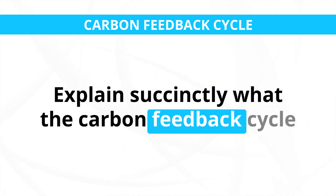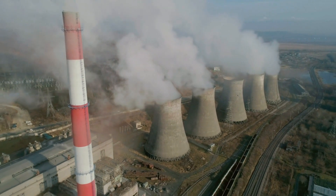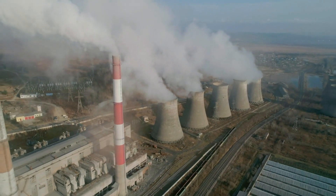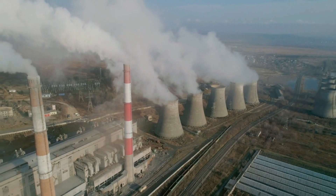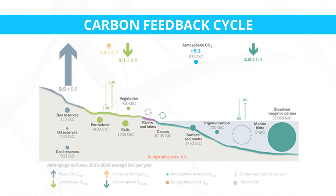Explain succinctly what the carbon feedback cycle is from first principles. Essentially, we emit a lot of CO2 into the atmosphere when we are burning fossil fuels — burning coal, oil, and gas — or through heating, transport, or producing energy. All of this CO2 goes into the atmosphere and stays there for quite long times — hundreds of years. But it's also part of the natural carbon cycle system, so we need to understand the whole carbon cycle to understand how much CO2 remains in the atmosphere. A large fraction goes back into the land and into the ocean.